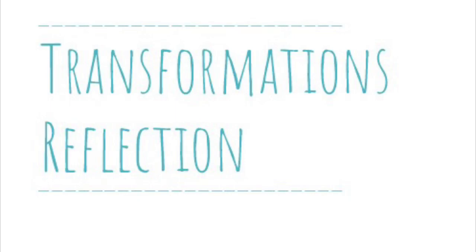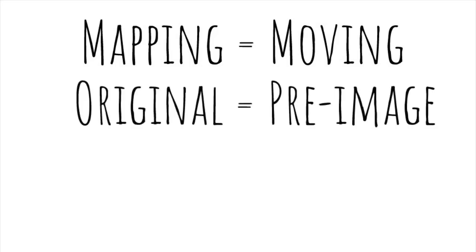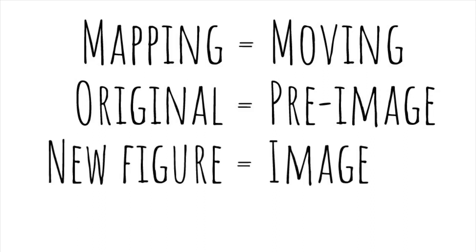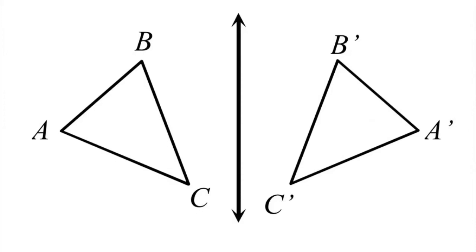Today we're going to take a look at transformations — more specifically, a reflection. This might be a review for some of you, but the way we use it in geometry is slightly different. When we talk about mapping, we're talking about moving an object. The original figure is called the pre-image, and the new figure we make is called the image. Transformations change the size, shape, or orientation of a figure.